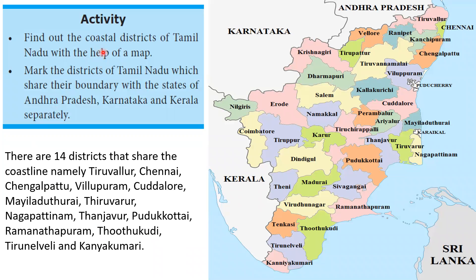The coastal districts of Tamil Nadu: There are 14 districts that share the coastline, namely Thiruvallur, Chennai, Chengalpattu, Villupuram, Cuddalore, Mayiladuthurai, Thiruvarur, Pudukkottai, Ramanathapuram, Thoothukudi, Tirunelveli, and Kanyakumari.